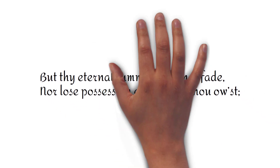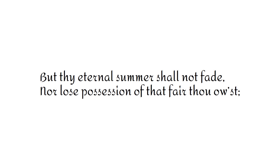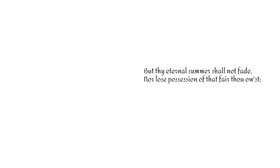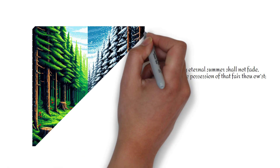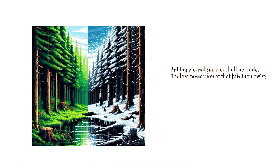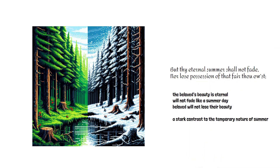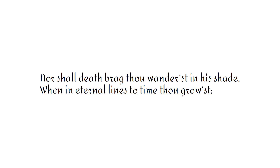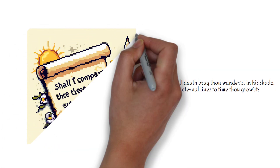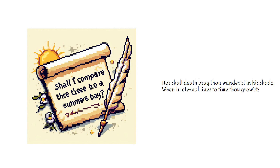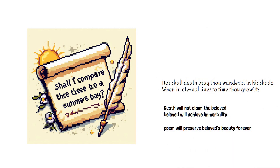"But thy eternal summer shall not fade, nor lose possession of that fair thou owest." However, the speaker asserts that the beloved's beauty is eternal and will not fade like a summer's day. The beloved will not lose their beauty, which is a stark contrast to the temporary nature of summer. "Nor shall death brag thou wand'rest in his shade, when in eternal lines to time thou growest." Death will not claim the beloved or boast that the beloved is in its power. The beloved will achieve immortality through the eternal lines of the sonnet.